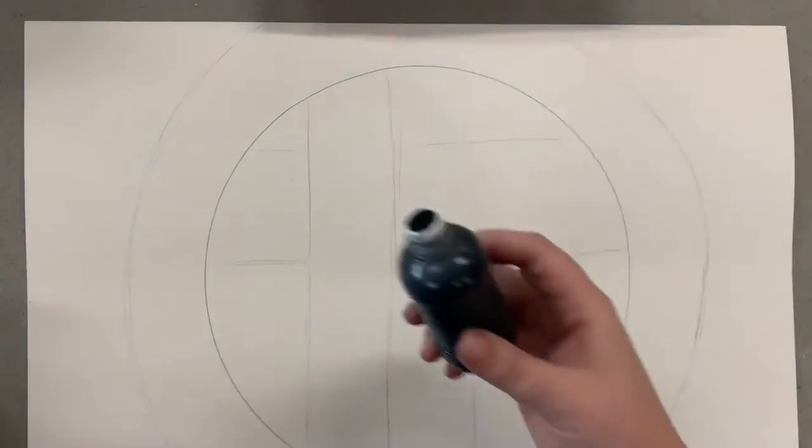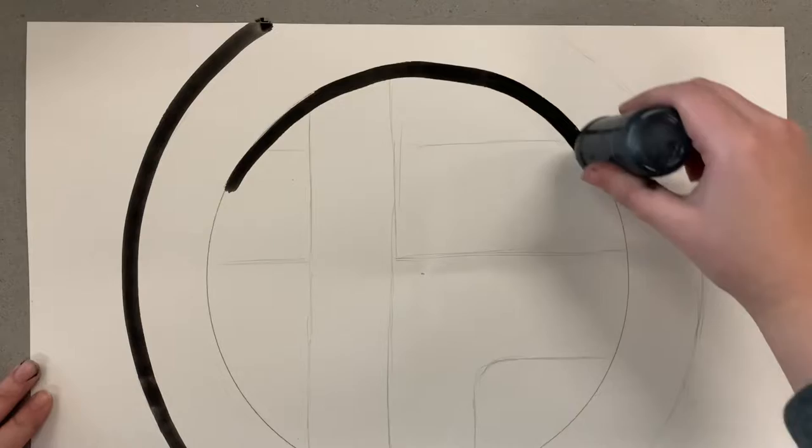On my paper, I've already sketched out my abstract design in pencil. So now I am taking an ink dauber and going over all of those lines very carefully.